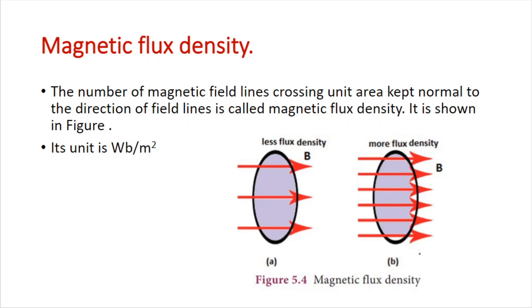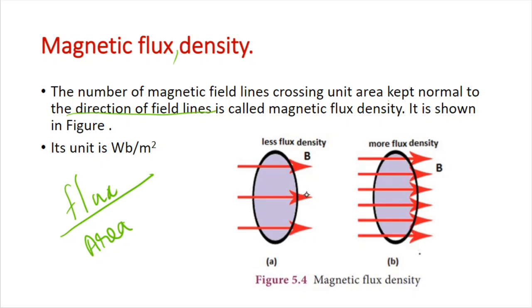Magnetic flux density is flux per unit area. The number of magnetic field lines crossing a unit area kept normal to the direction of the field lines is called magnetic flux density. The area is kept perpendicular — that is, normal to the direction of the magnetic field lines.